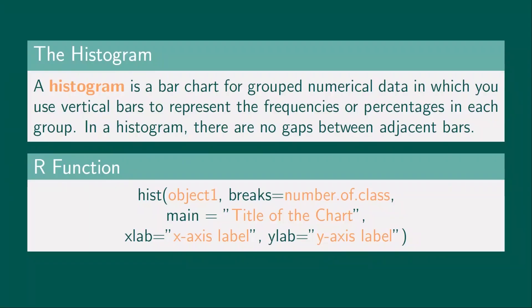Third is histogram. A histogram is a bar chart for grouped numerical data in which you use vertical bars to represent the frequencies or percentages in each group. In a histogram, there are no gaps between adjacent bars. Histogram is commonly used to describe numerical data. The code below allows us to generate a histogram in RStudio. Object1 represents the column that contains the data of your variable. Breaks allows us to set the number of classes or groups to be used. xlab allows us to set the label for the x-axis and ylab is for the y-axis.